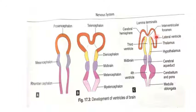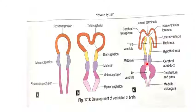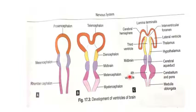The two hemispheres, right and left, have cavities forming the lateral ventricles. The cavity of the diencephalon forms the third ventricle. The cavity of the mesencephalon remains narrow and forms the cerebral aqueduct. The cavity of the rhombencephalon forms the fourth ventricle.